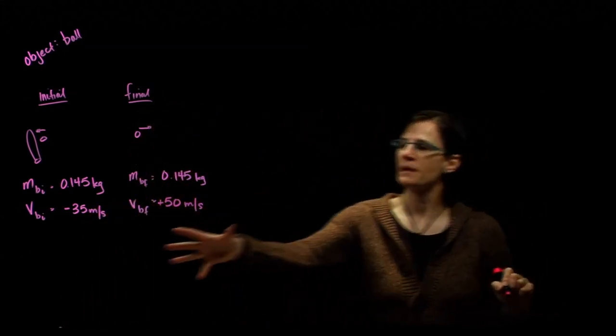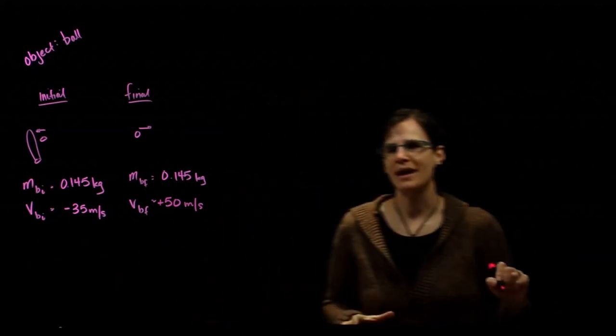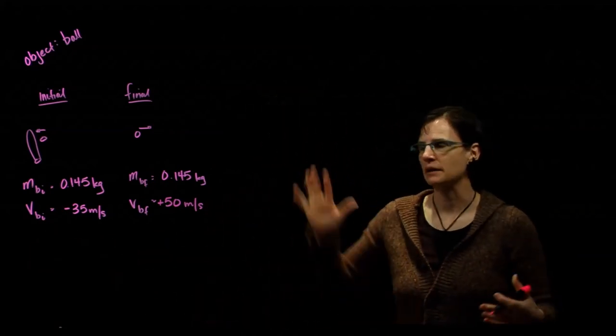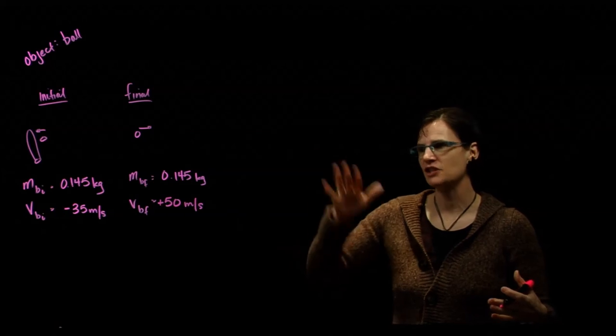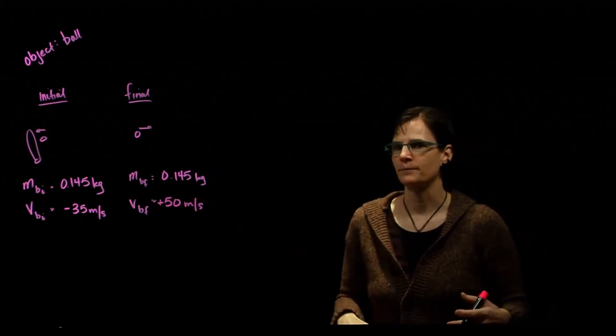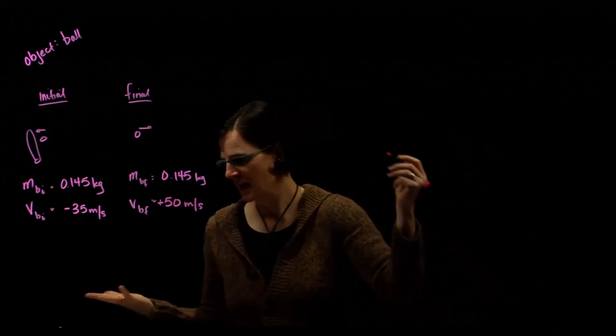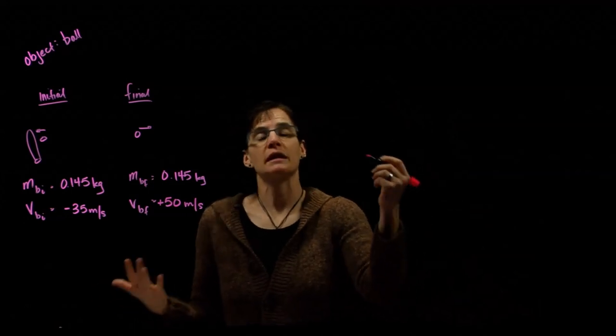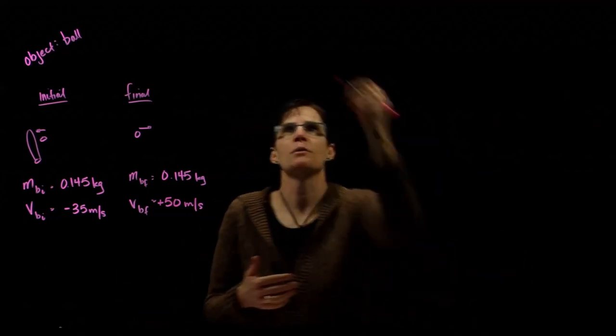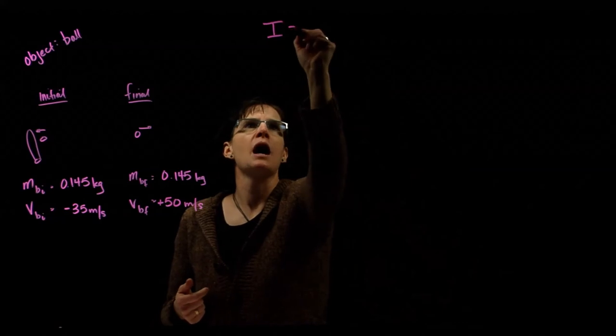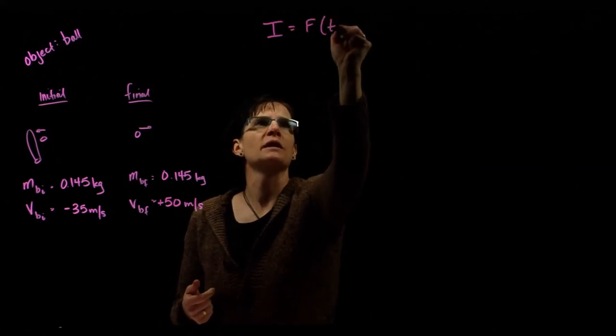The ball leaves purely horizontally at 50 meters per second, and because that's moving to the right, that is a positive velocity. So that is our information relative to when the momentum change is happening. The question asks us to look at the average force, and force is what's causing the change in momentum through our impulse relationship.